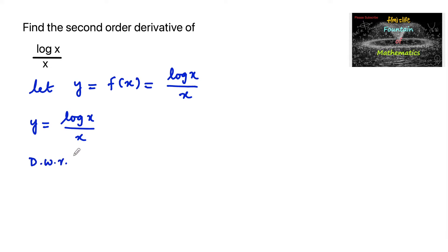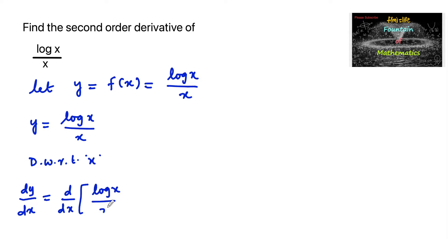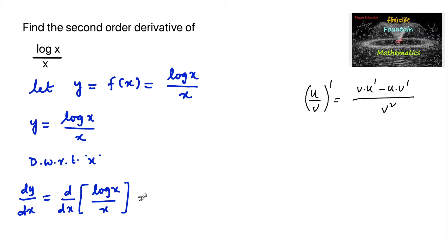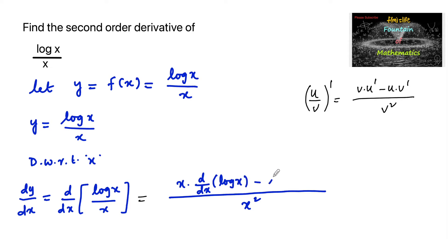Differentiate with respect to x. So we have dy by dx is equal to d by dx of log x upon x. We know that the quotient rule: the derivative of u by v is equal to, upon v square, v into u dash minus u into v dash. So we can write here upon x square: x into d by dx of log x minus log x into d by dx of x.